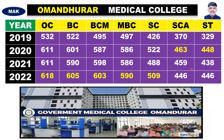Next is Omandurar Medical College. Omandurar started in 2015, but it is located in the capital and it is a more funded college by the government. It is one of the top colleges, which is why the cut-off mark is high. Omandurar is a high-speciality, multi-speciality setup. OC is 618, BC is 605, BCM is 603, MBC is 590, SC is 509, SCA is 463, ST is 448.